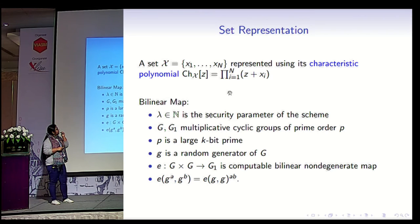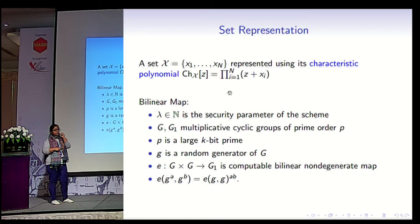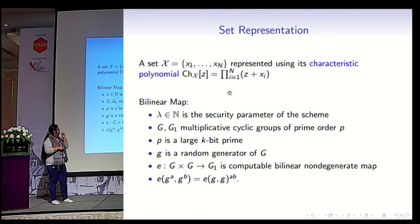We are working in the bilinear map setting where G and G1 are multiplicative cyclic groups of prime order. For the purpose of this talk, we write it as a symmetric setting, which for efficiency we can implement with an asymmetric setting. This is a computable non-degenerate bilinear map. The bilinear map is represented as: e(g^a, g^b) = e(g, g)^(ab). We are going to instantiate our construction based on this.